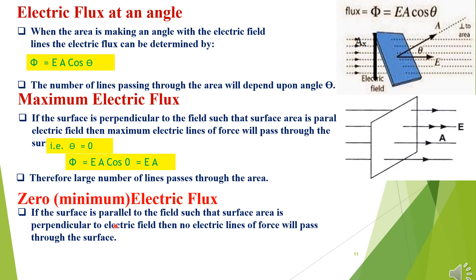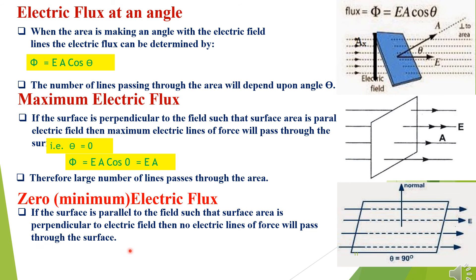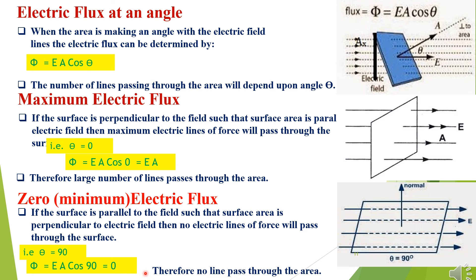Zero or minimum electric flux: if the surface is parallel to the field such that the vector area is perpendicular to the electric field, no electric lines of force pass through the surface. The angle between the electric field lines and the vector area is 90°, so Φ = E A cos 90° = E A × 0 = 0. Therefore no lines pass through the area and the electric flux is zero.